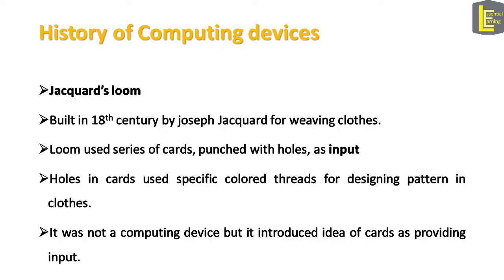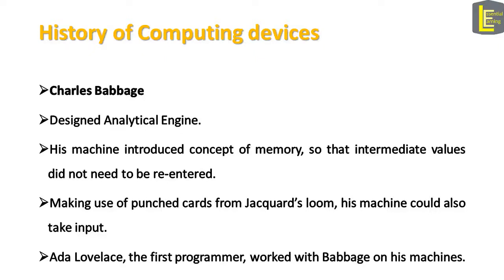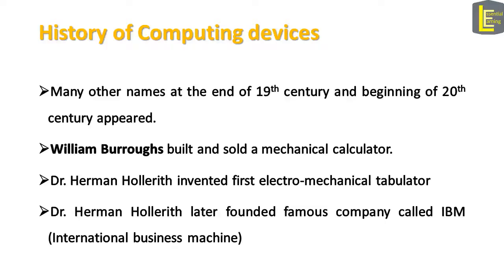In the 18th century, Joseph Jacquard invented a loom for weaving clothes. The loom used a series of cards punched with holes as input, and the holes in the cards used specific colored threads for designing patterns in clothes. Although it was not a computing device, it introduced the idea of cards as providing input. In the 19th century, Charles Babbage designed difference engines and provided notes for designing analytical engines. This was the first machine that introduced the concept of memory, so that intermediate values did not need to be re-entered. Making use of punched cards from Jacquard's loom, his machine could also take inputs. Famous programmer Ada Lovelace worked with Babbage on his machines.